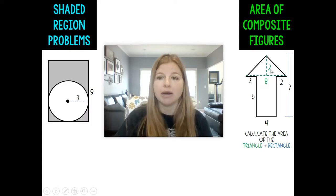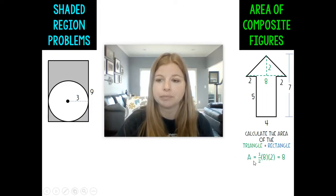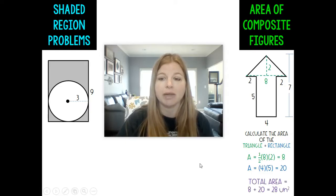So now I can do my area of my triangle which is one half base times height so one half eight times two which is just eight units squared. The area of my rectangle would be five by four which is 20 and so my total area would simply be 28 units squared.